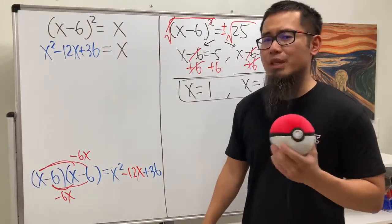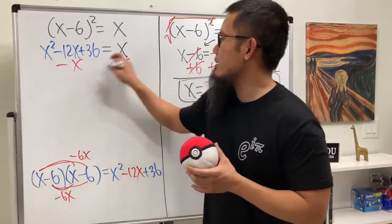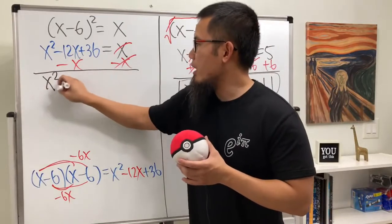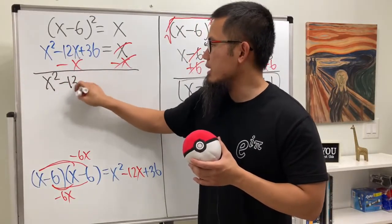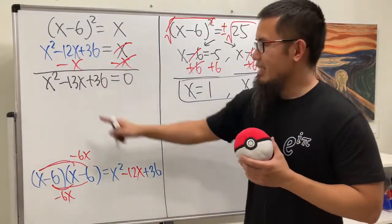How can we make it equal to 0, though? Subtract both sides by the x. Right here, right here. Cancel this out. So, we are looking at x squared minus this and that is 13x. And then, plus 36. And that's equal to 0.